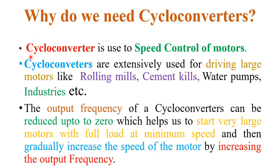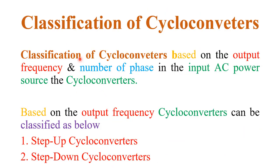Why do we need a cycloconverter? Cycloconverters are basically used for speed control of motors. They are extensively used for driving large motors like in rolling mills, cement plants, water pumps, and industries where large motor speed control is required. The output frequency of a cycloconverter can be reduced up to zero, which helps us start very large motors with full load at minimum speed, and then increase the speed by increasing the output frequency.